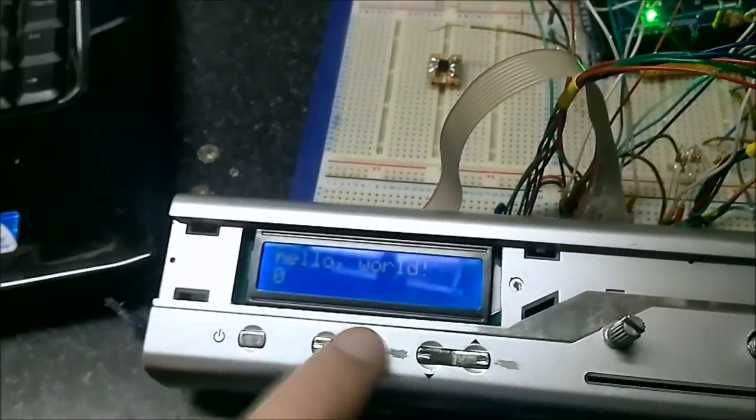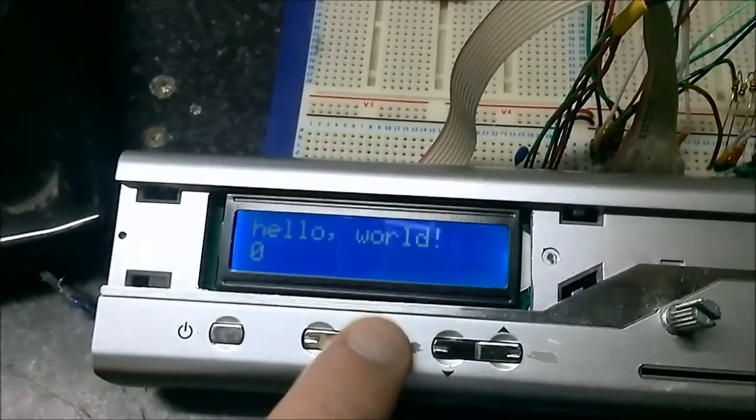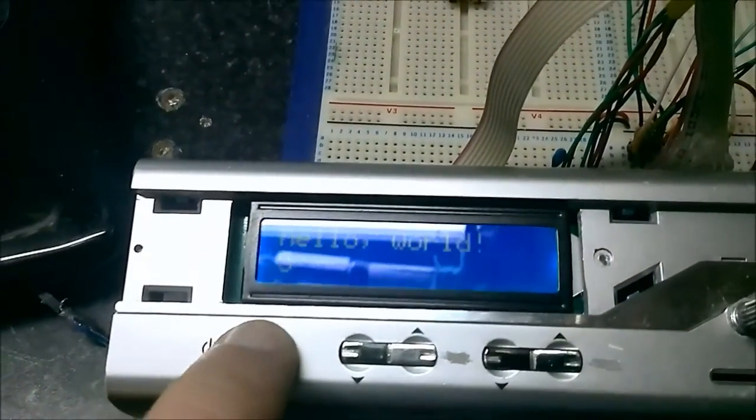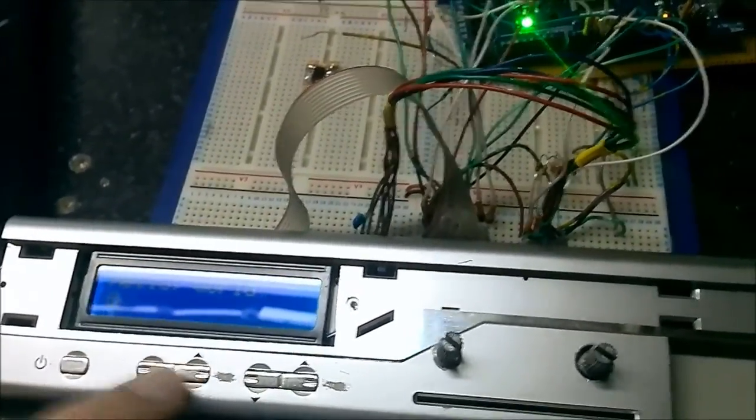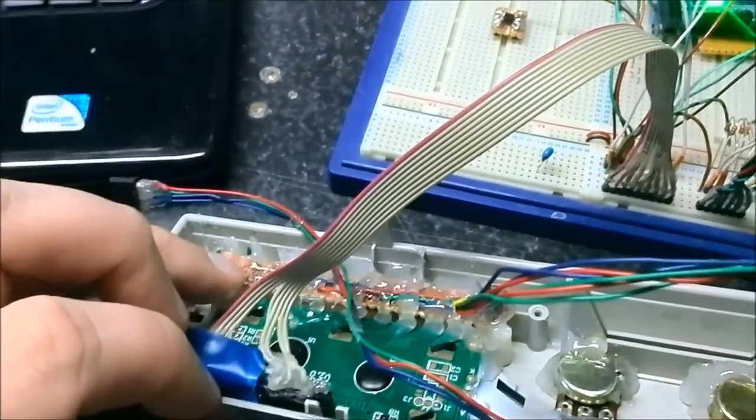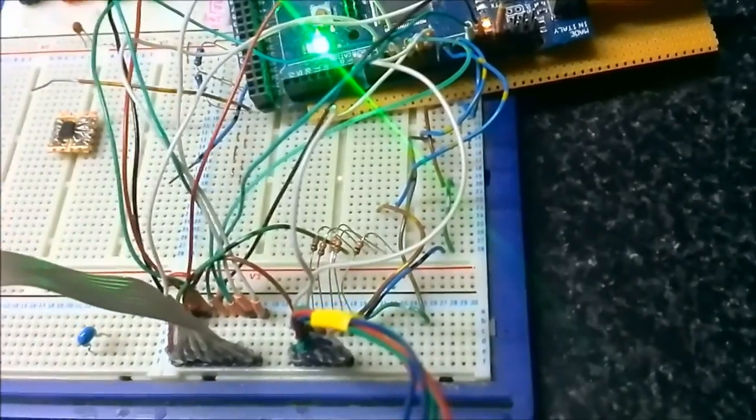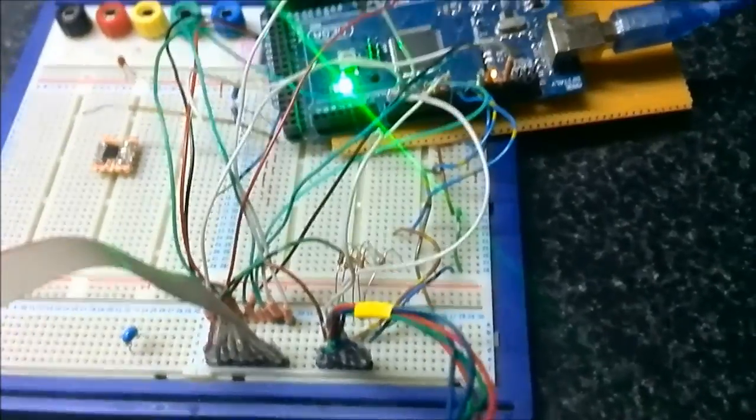And basically these increment and decrement 1, these increment and decrement 10, and that just resets to 0. Okay, so basically all I did is there is a common wire going to 5 volts and then the signal wires all come out here. There's a pull down resistor to ground using 10k resistors for that, and then the signal wires also go into the Arduino.